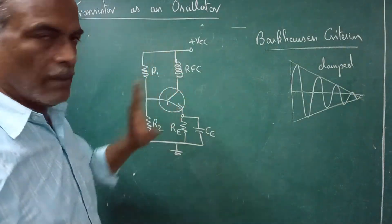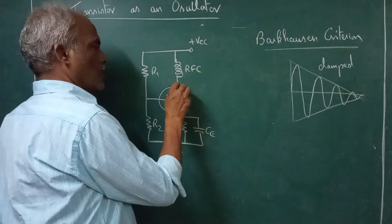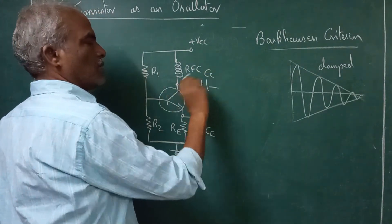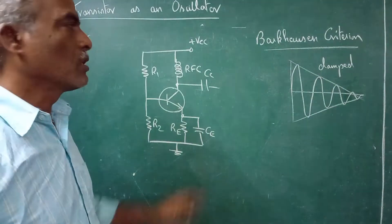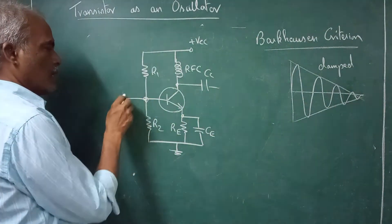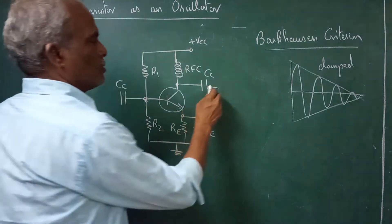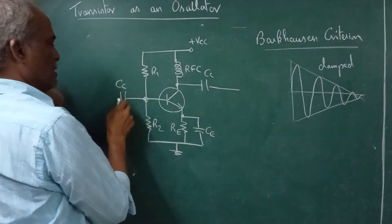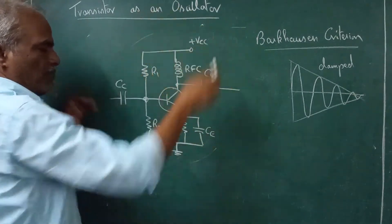Now we have the amplifier. This is the coupling capacitor CC — it couples AC but blocks DC; DC will not come out, only the AC signal. Similarly here also we have a coupling capacitor. This entire section is called an amplifier.